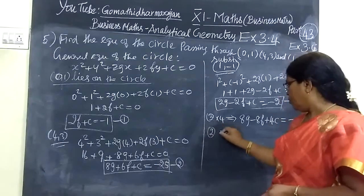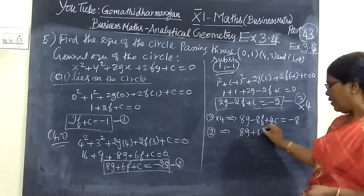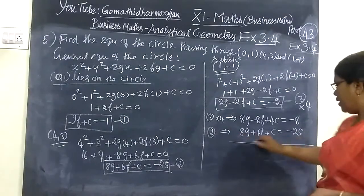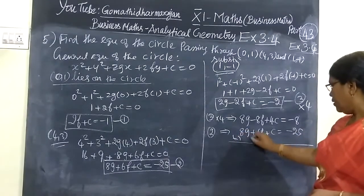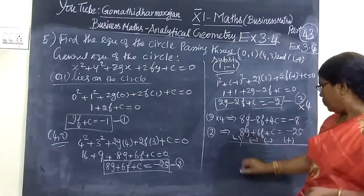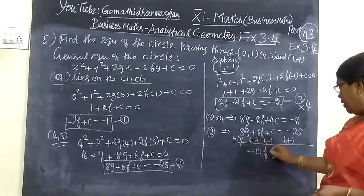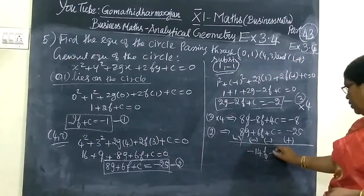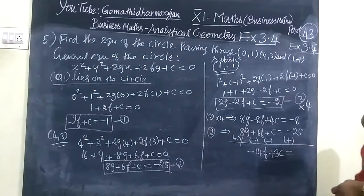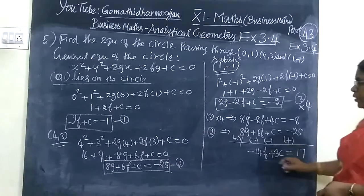Equation 2 implies 8g plus 6f plus c equal to minus 25. Now subtract these equations. This gives minus 14f plus 3c. After canceling terms, we get minus 14f plus 3c equal to plus 17.